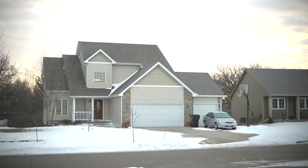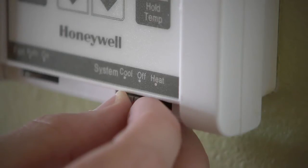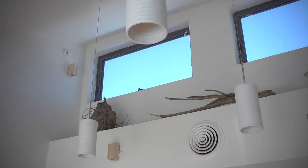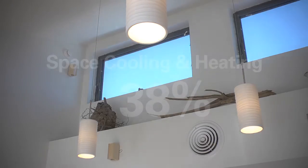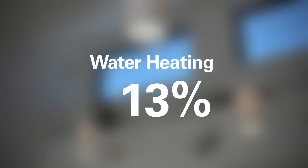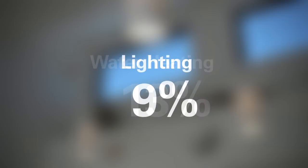A home consumes energy in many ways. The majority of energy is used for the cooling and heating of the home space, water heating, and lighting. In residential spaces, cooling and heating accounts for about 38% of total energy used. Water heating is 13% and lighting is 9% of a home's energy.